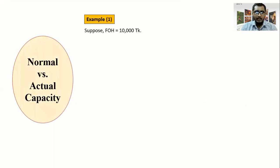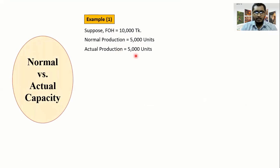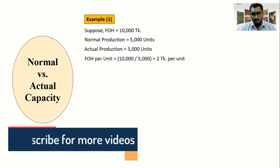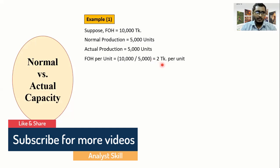Example 1: A company has fixed overhead of 10,000 — this is a hypothetical amount. The normal production capacity is 5,000 units, and the actual production is also 5,000 units. Fixed overhead per unit = 10,000 ÷ 5,000 = 2 taka per unit. Here, since normal equals actual, the cost per unit is straightforward at 2 taka.